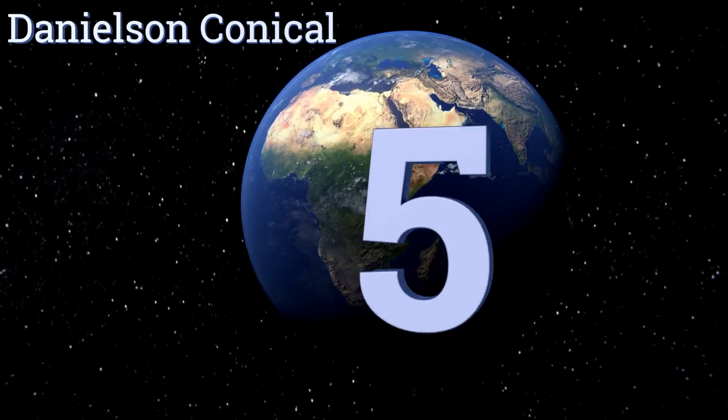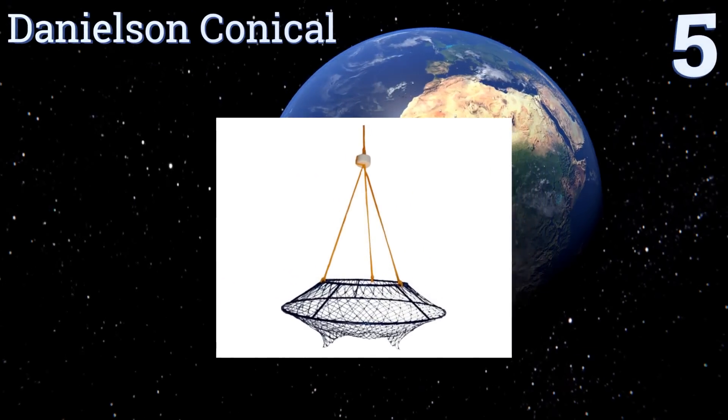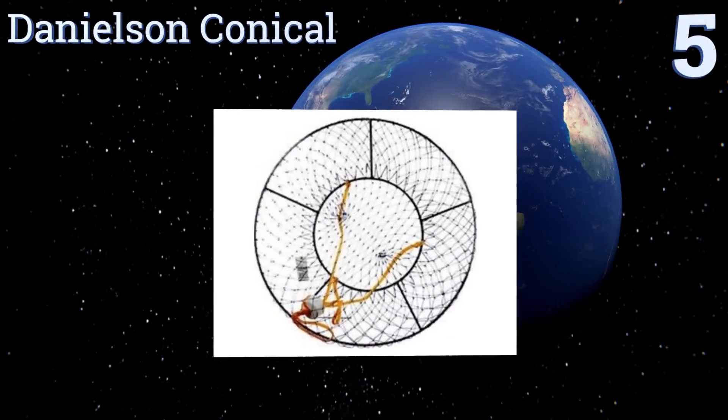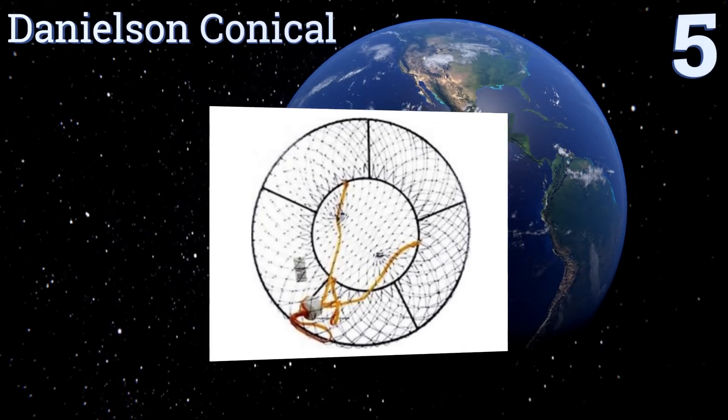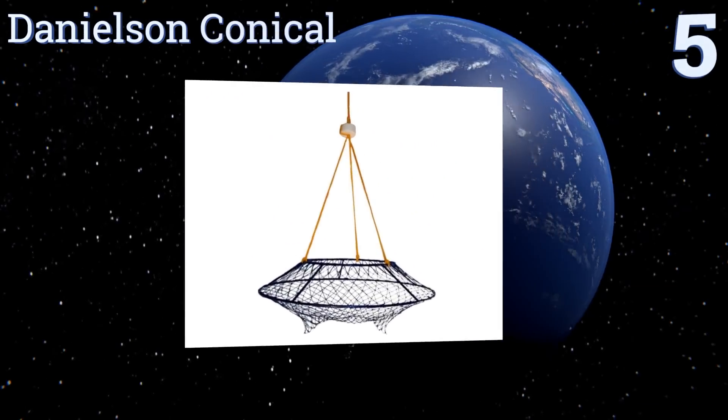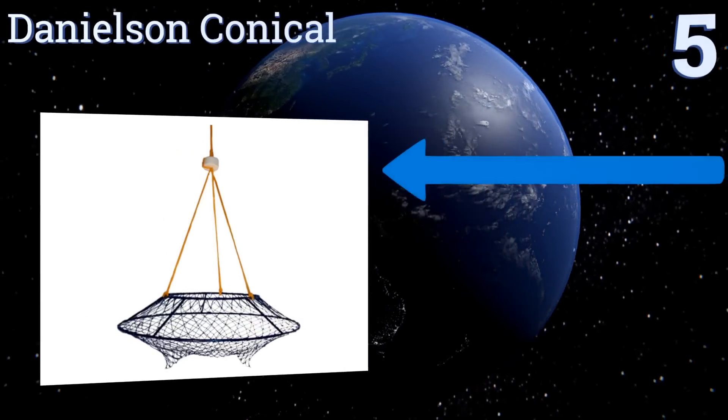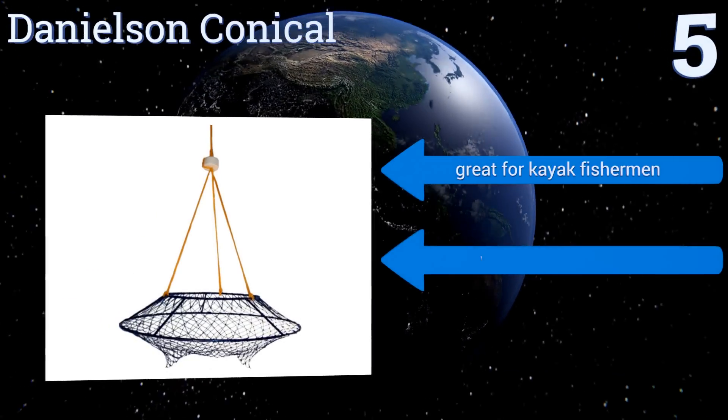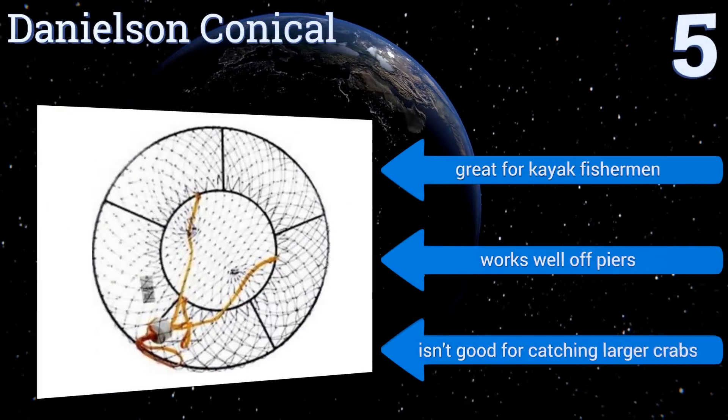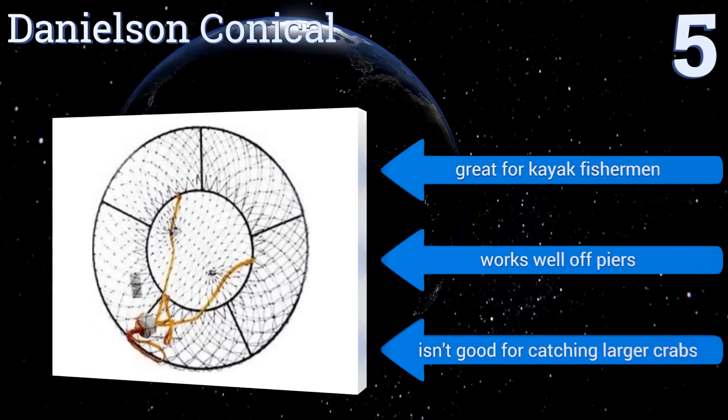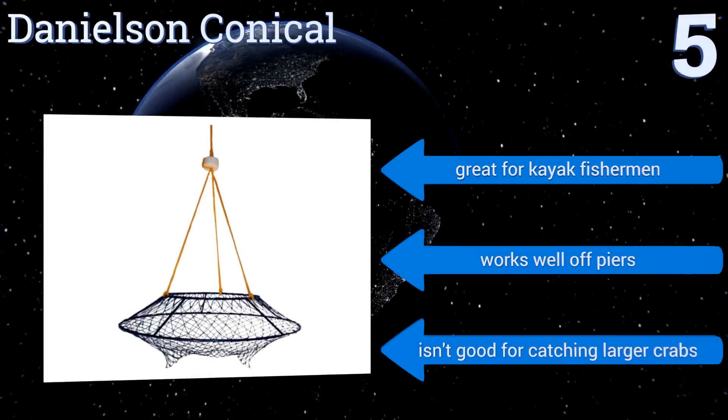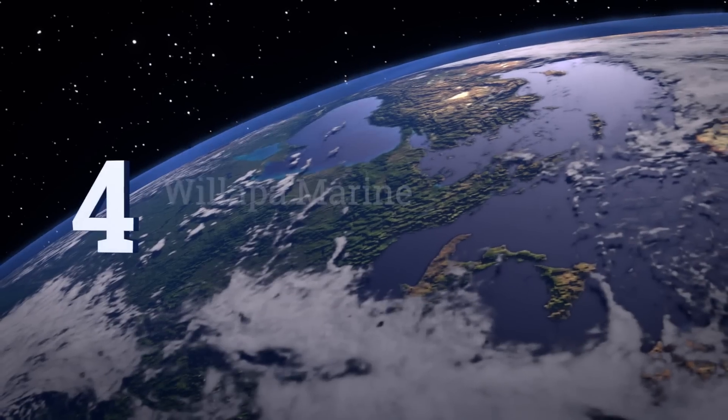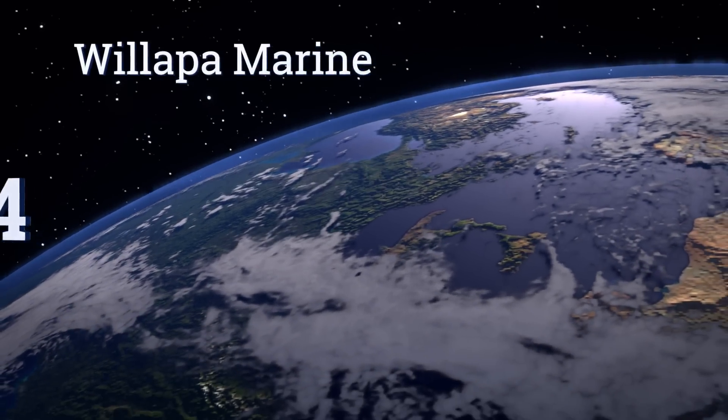Halfway up our list at number five, if space is at a premium then this collapsible Danielson conical option is just what the doctor ordered. Crabs can enter from any direction, increasing your odds of a big haul. It does make it easier for seals to get inside your cage however. It's great for kayak fishermen and works well off piers too, but it isn't good for catching larger crabs.